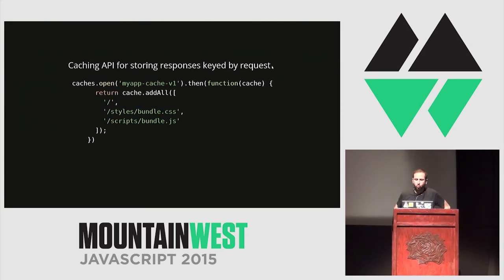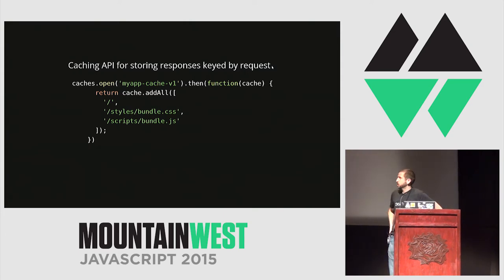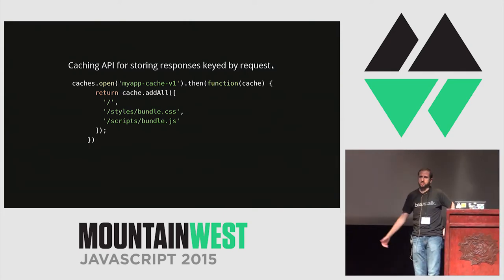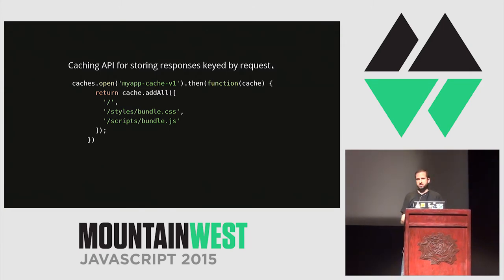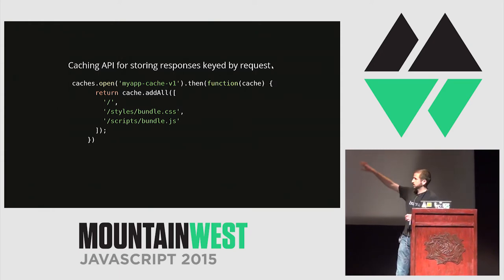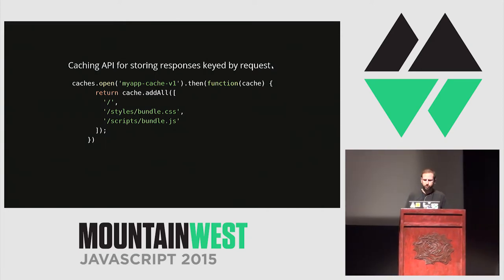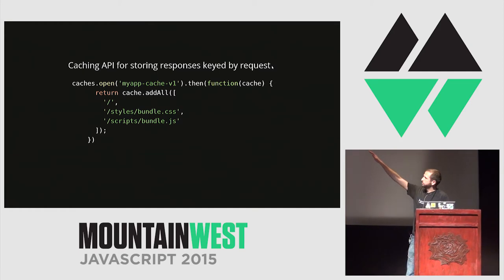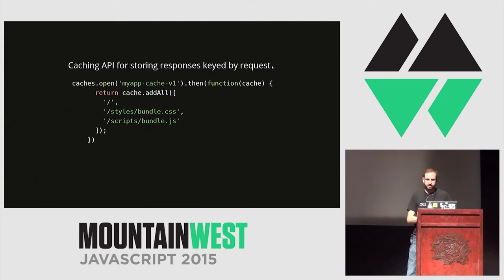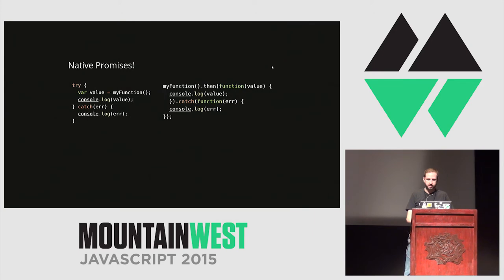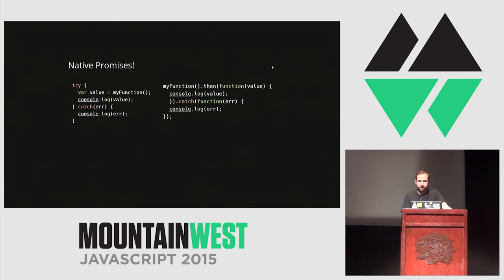The Service Worker API includes a caching API — a new caching mechanism that is not IndexDB, not local storage, this is a new API altogether where you can cache blobs of data. You'll notice there's a .then method — this is native promises inside the browser, APIs that are returning promises. These new APIs are actually using JavaScript 2015 stuff.